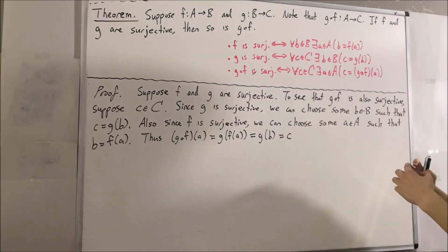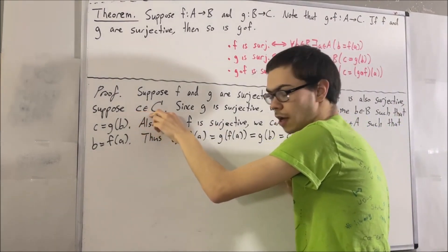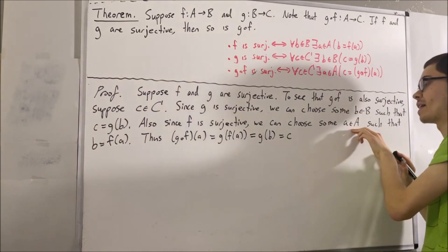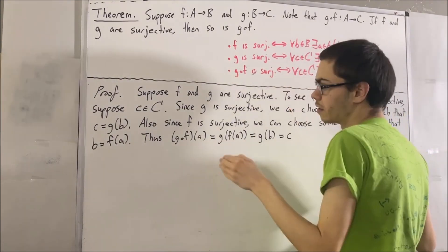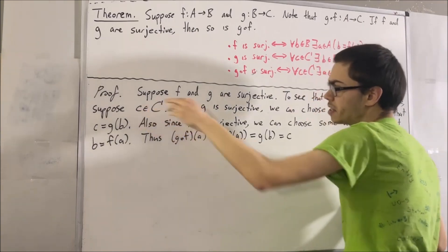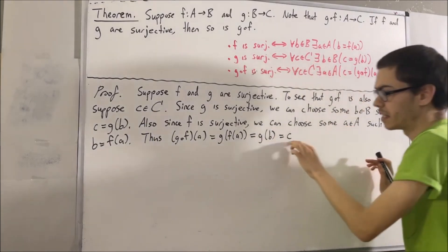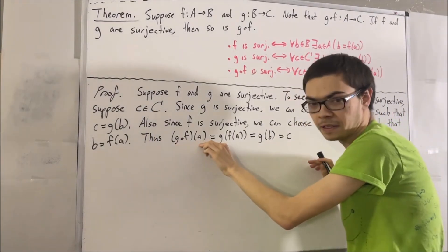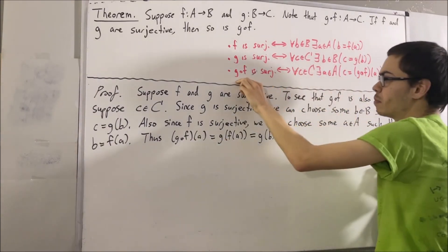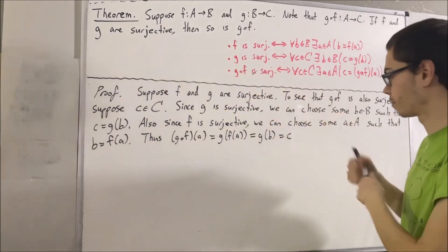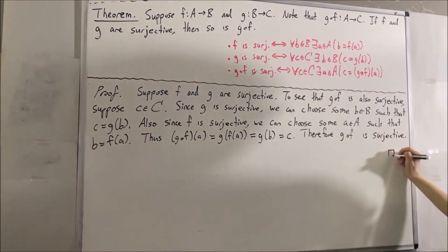Putting this all together, we started with an arbitrary element c in C, and we proved that there is an element a in A such that c equals g compose f of a. And since c was arbitrary, this means for every element c in C, there is an element a in A such that c equals g compose f of a. So we have proven precisely that g compose f is surjective, and this completes the proof.